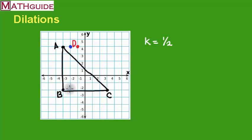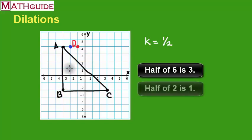Now let's find the distance to B. B is a little bit harder to do because it's kind of a diagonal distance, but we're going to take it in terms of vertical and horizontal. It looks like it's got a distance of six spaces going down and two spaces over. So we're going to take half of those distances. Half of six is three, so I'm going three units down. And instead of going two units to the right, I'm going to go half those distances — three units down, one unit over. So I'm going half the distance to B because that's the scale factor, half.